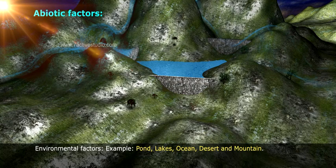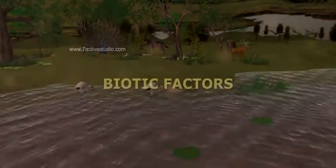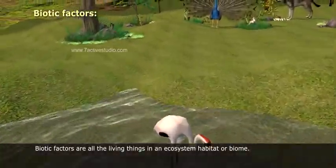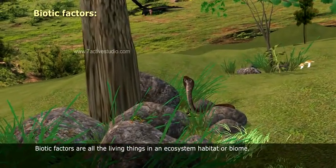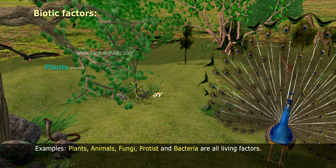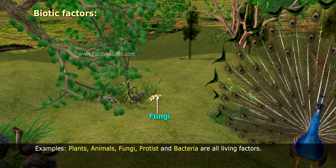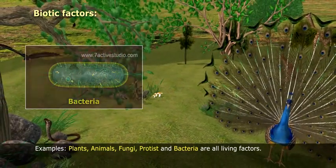Environmental factors include pond, lakes, ocean, desert, and mountain. Biotic factors are all the living things in an ecosystem, habitat, or biome. Examples include plants, animals, fungi, protists, and bacteria, which are all living factors.